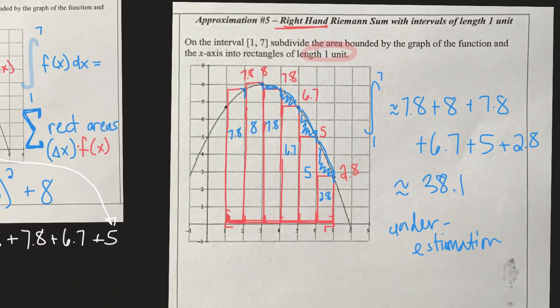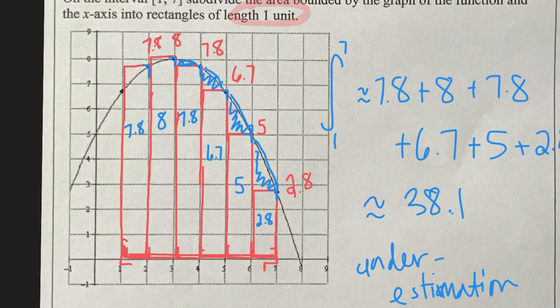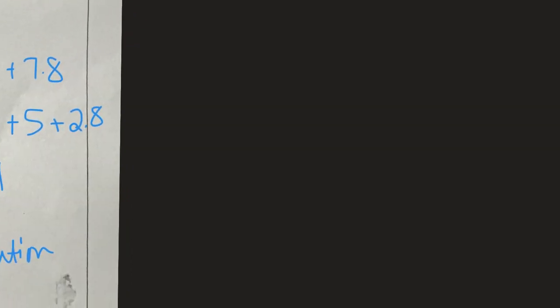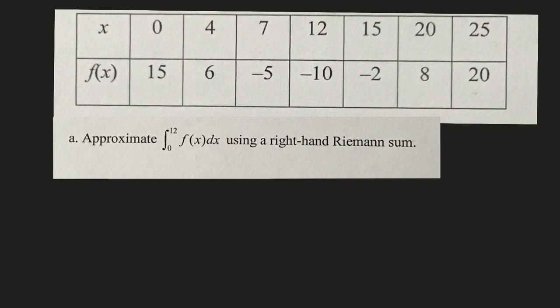So that's how we do it when we have a graph with y-values and a grid we can count. But what happens if we have a table of values? Here is a table with x-values at 0, 4, 7, 12, 15, 20, and 25 — as you might notice, these are not even intervals. We're still going to approximate, this time from 0 to 12 using right-hand Riemann sums.